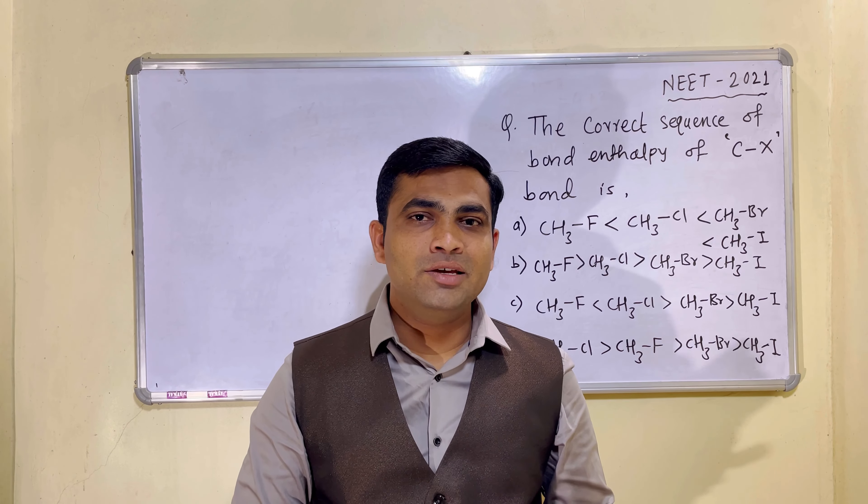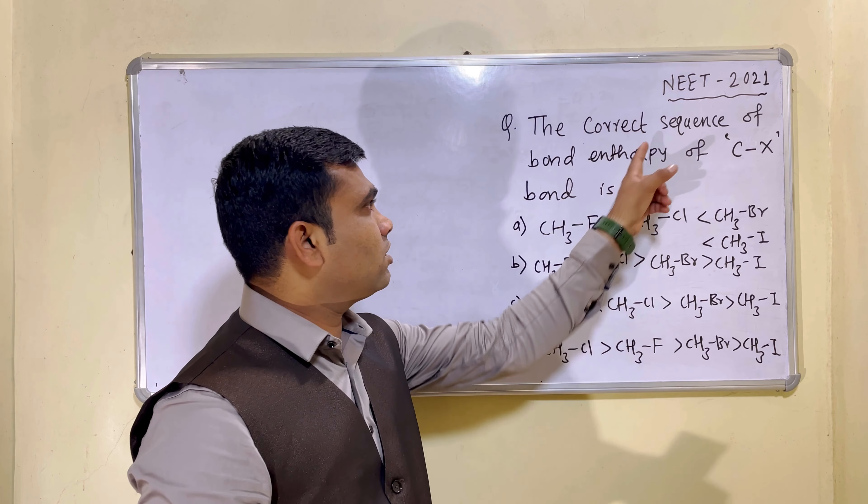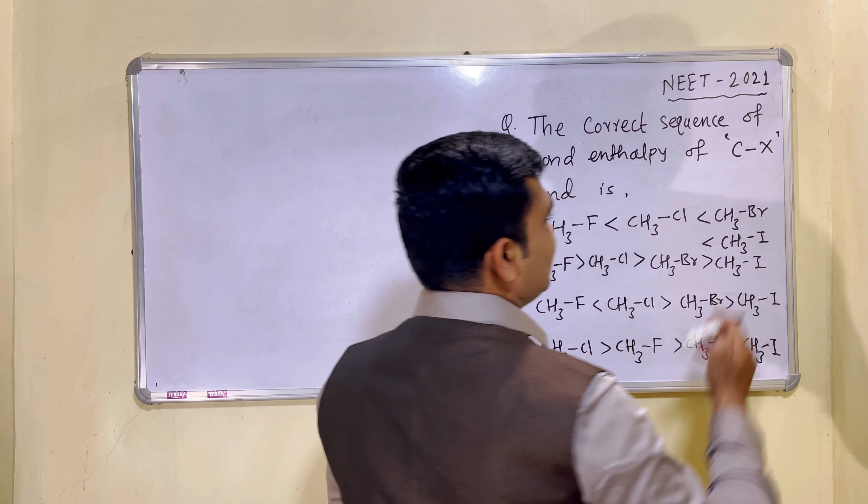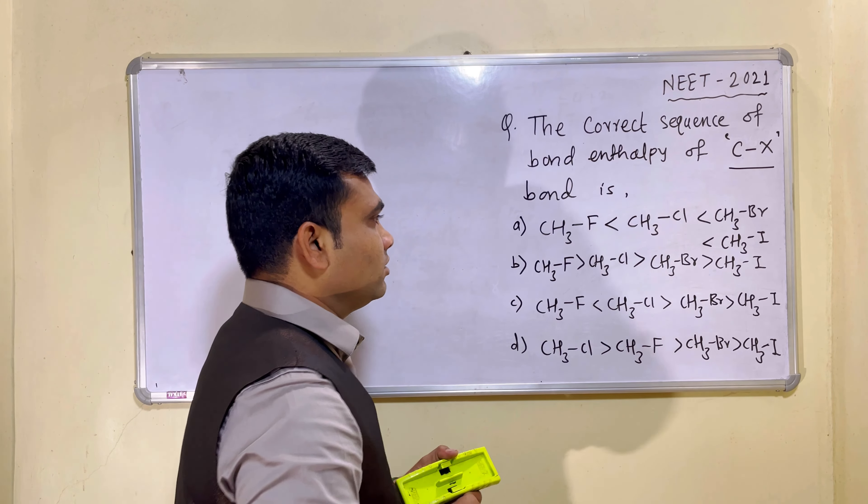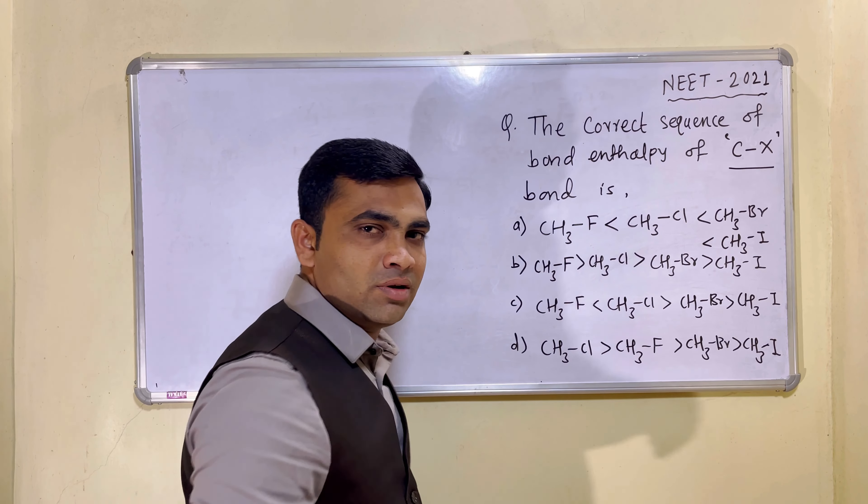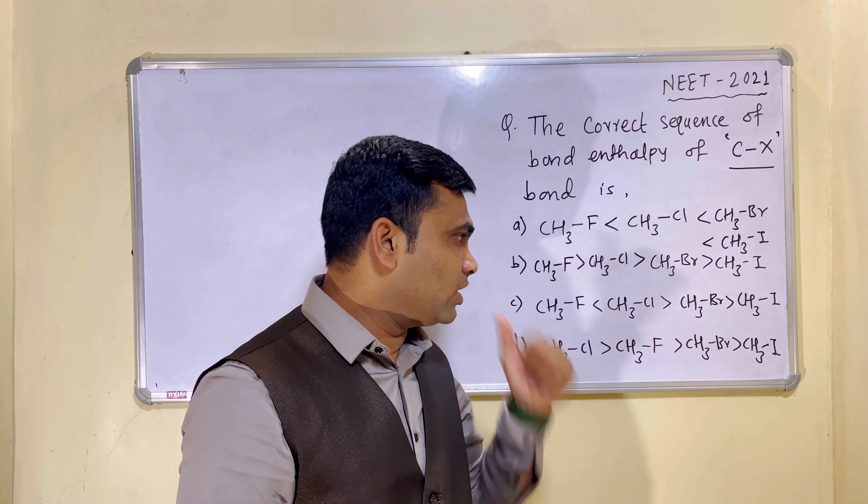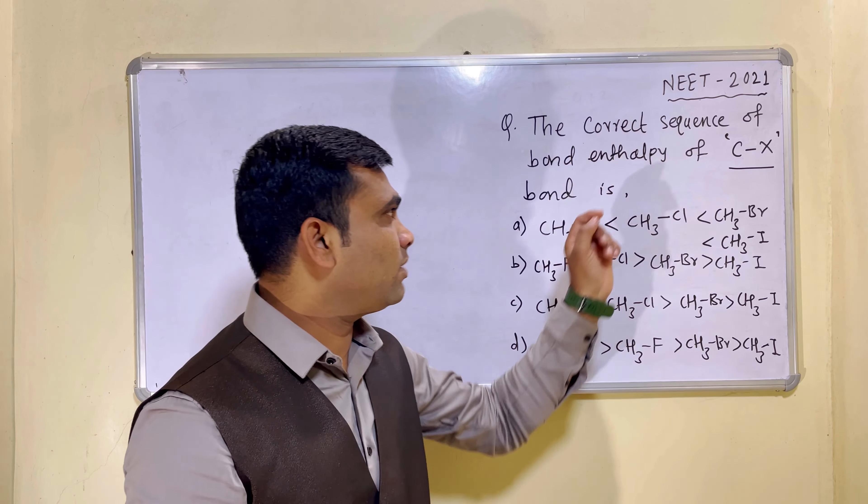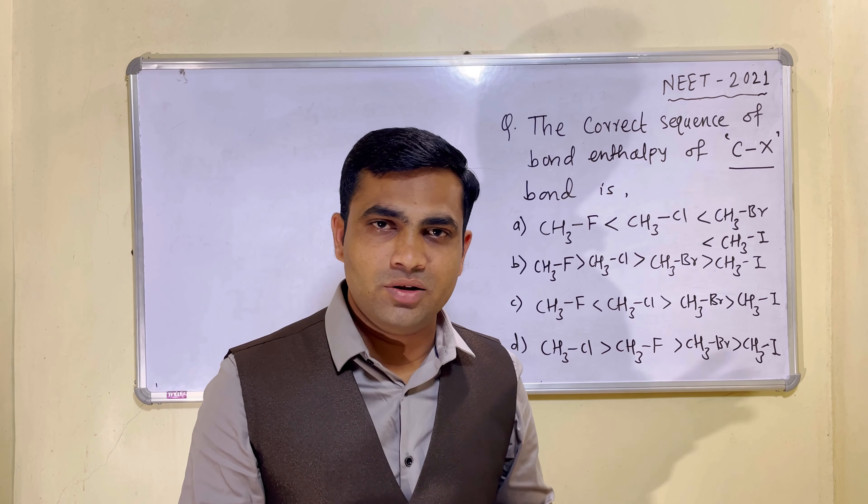So the problem is regarding the bond dissociation enthalpy. The question is the correct sequence of bond dissociation enthalpy of C-X bond, that is carbon-halogen bond. Different options they have given like for CF bond, CCl bond, CBr bond and CI bond. Let us first, we will not look at options. We will discuss what is bond enthalpy and then we will arrange them according to the given order.